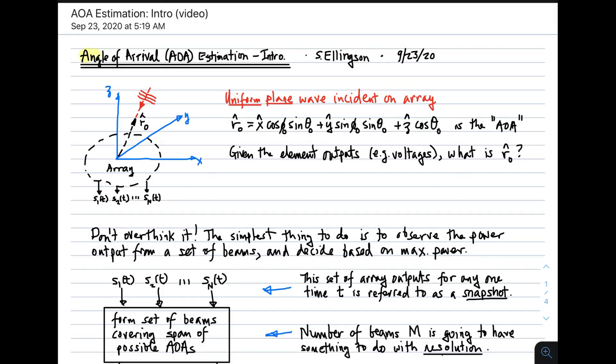Welcome to an introduction to angle of arrival estimation. The scenario we'd like to consider is shown in the figure on the left, in which we have an array that produces outputs identified as s1(t), s2(t), up to sN(t), so capital N elements in this array. Incident upon this array is a uniform plane wave from a direction identified as r hat nought, where r hat is a unit vector pointing in the direction of arrival, the angle of arrival.